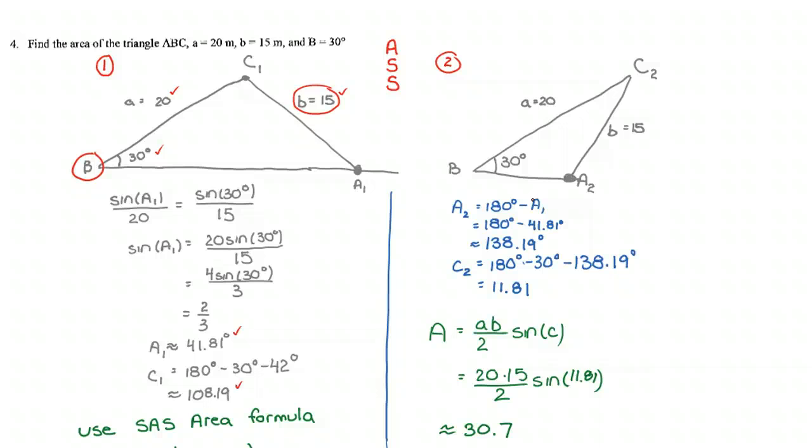But there's a number of ways you can justify this to yourself. And I do recommend you look into it. I have some videos on here that do talk about this idea. So now that I have this new A2, that means I have to recalculate angle C2. And once I've recalculated angle C2, I can then go through the same process to calculate my area. And I'll get the second answer.